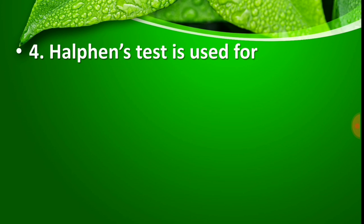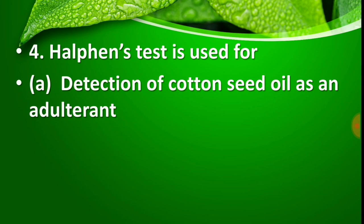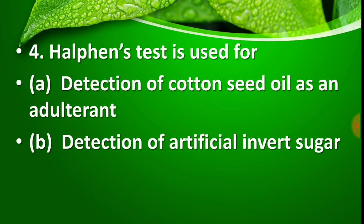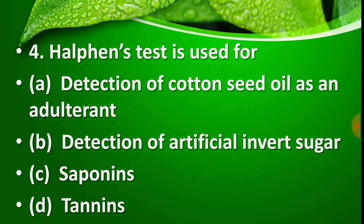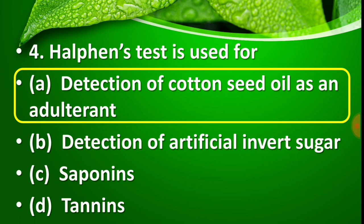Question number 4: Halphen's test is used for — Option A: detection of cottonseed oil as an adulterant, Option B: detection of artificial invert sugar, Option C: saponins, Option D: tannins. The right answer is Option A — Halphen's test is mainly used for the detection of cottonseed oil as an adulterant.